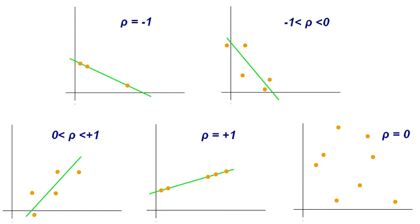Model selection criteria will select the model that most closely approximates the true model. The AIC (Akaike Information Criterion) and the Bayesian Information Criterion (BIC) are examples of asymptotically efficient criteria.